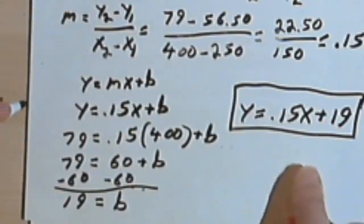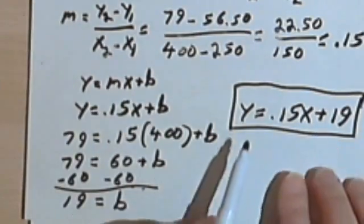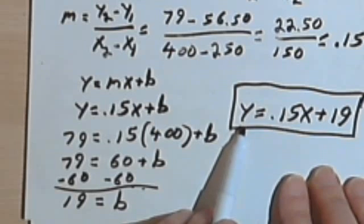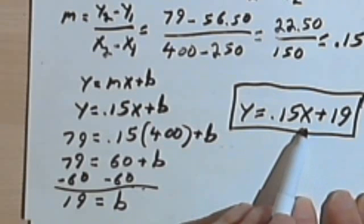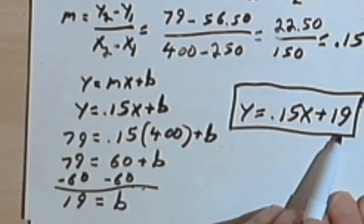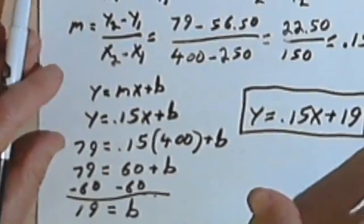That's my b here. So now I can take this and plug in the 19. That's going to give me y equals 0.15x plus 19. And we could, of course, interpret this equation as the cost of renting a car is 15 cents per mile plus a basic fee of 19 dollars. Okay, let's do one more.